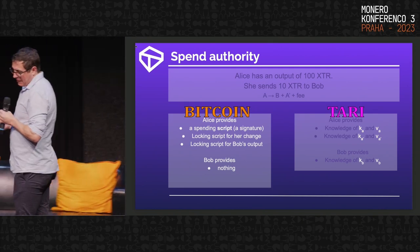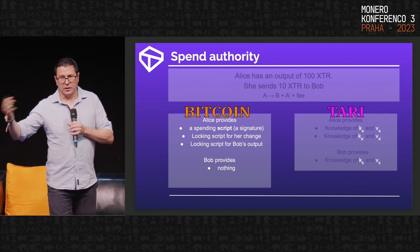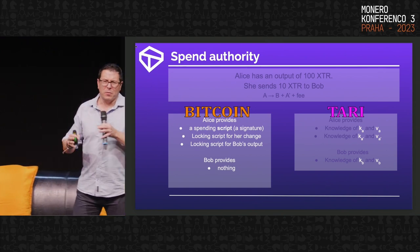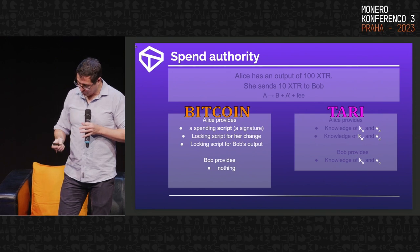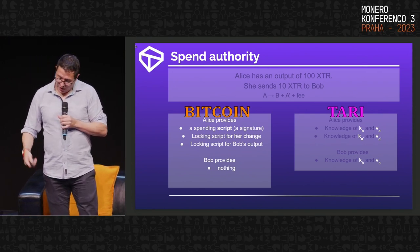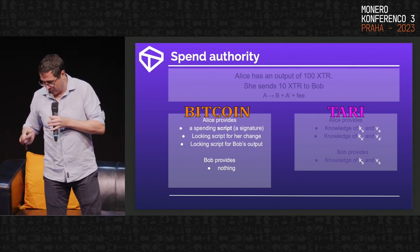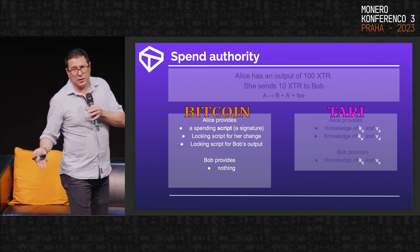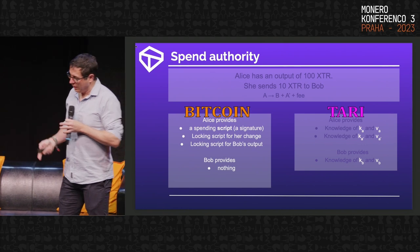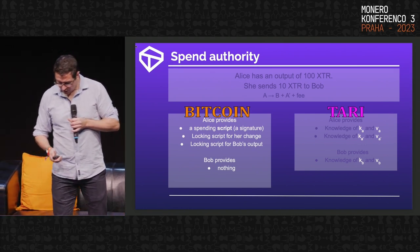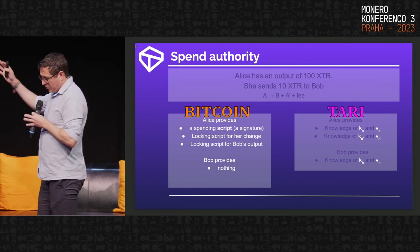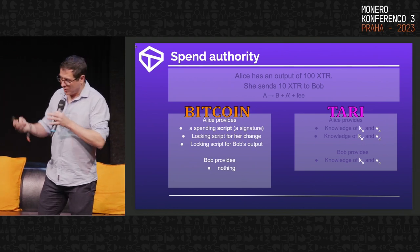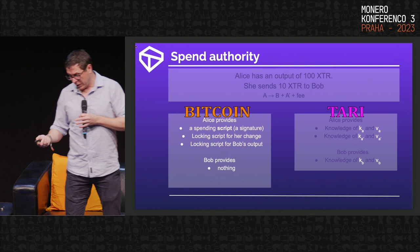So what is the spend authority? On Bitcoin, Alice provides the spending script for her output, the locking script for the change, and Bob's output — Bob provides nothing. It's completely non-interactive. On Tari, Alice provides knowledge of KA and VA — the output she's spending — and she creates a secret for her change, but she can't create a secret for Bob's output, because if she did, she'd be able to spend his output. So Bob needs to come in and provide his secret KB. That's why Mimblewimble is interactive, which makes things like tip jars, exchanges, and mining pool payouts challenging.